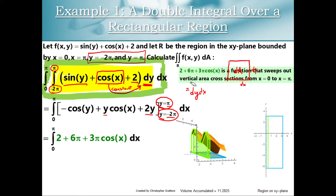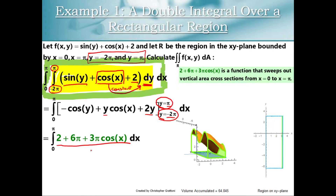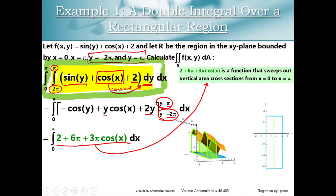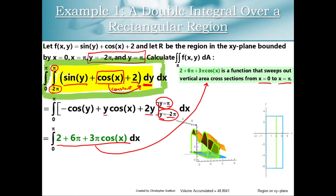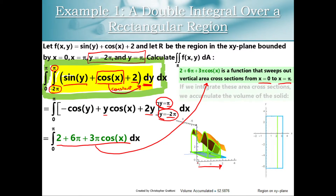What I can offer you is a graphical interpretation of this expression. Our new integrand is actually a function that sweeps out vertical area cross sections as x varies from 0 to pi. Imagine this green integrand sweeping out area cross sections going from left to right as x goes from 0 to pi. As we sweep out these area cross sections, we accumulate the volume that's trapped between our surface and our region on the xy plane.